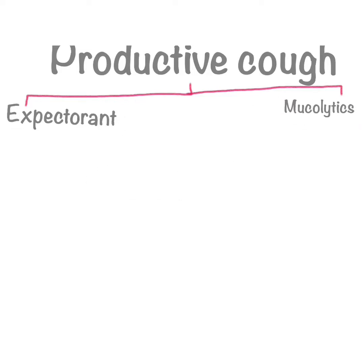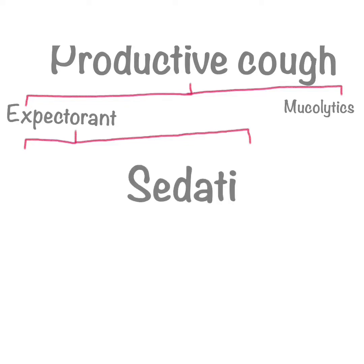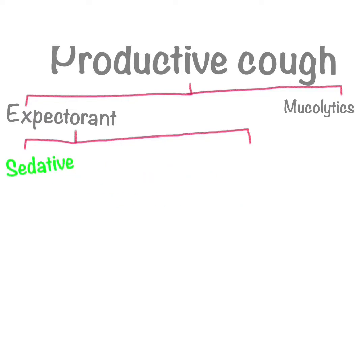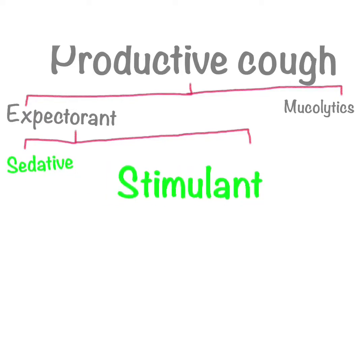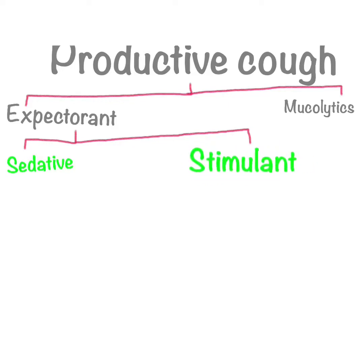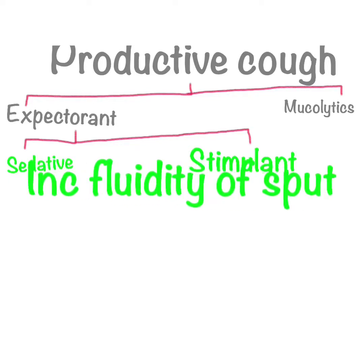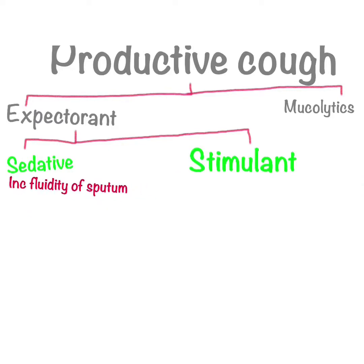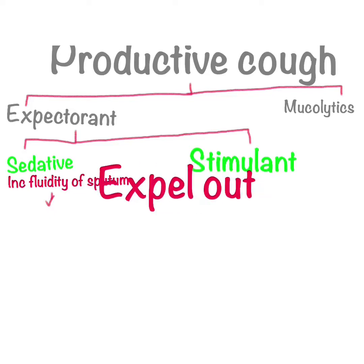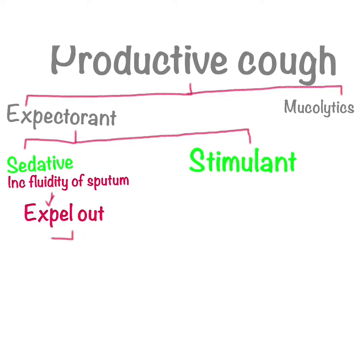Expectorants are drugs that facilitate the expulsion of respiratory secretions outside by coughing, because if these secretions accumulate in the respiratory tract they create pulmonary problems. Expectorants are used for acute disorders such as cold, pneumonia, chronic emphysema, and chronic bronchitis. Expectorants are divided into two categories: sedative expectorants and stimulant expectorants.